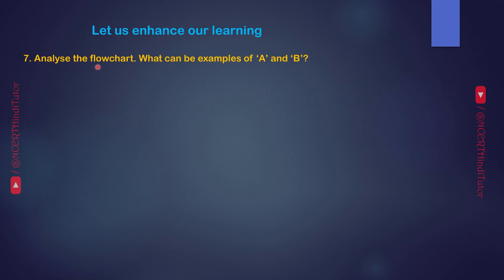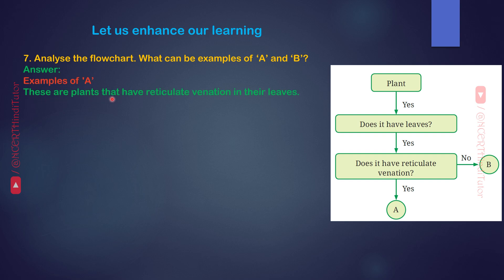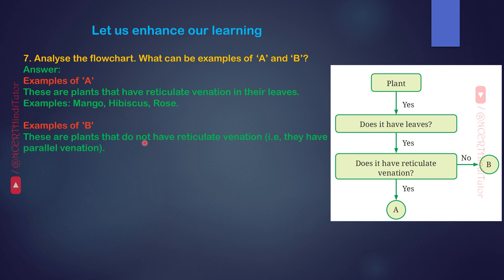Question 7. Analyze the flowchart. What can be examples of A and B? Plant — does it have leaves? Yes. Does it have reticulate venation? Yes — A. No — B. Answer. Examples of A: These are plants that have reticulate venation in their leaves. Examples: Mango, Hibiscus, Rose. Examples of B: These are plants that do not have reticulate venation — that is, they have parallel venation. Examples: Wheat, Maize, Grass.